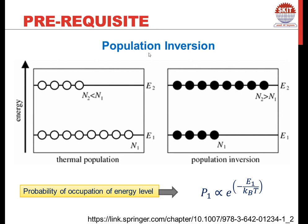Population inversion is a phenomenon which is not natural. In nature, the distribution of atoms, if we give certain energy to a collection of atoms, is defined by the Maxwell-Boltzmann distribution. It says the probability of occupation of an energy level, say an excited energy level, would be proportional to the exponential of minus of energy divided by k_B times T, where k_B is Boltzmann's constant, T is the absolute temperature, and E is the energy of that particular energy level.